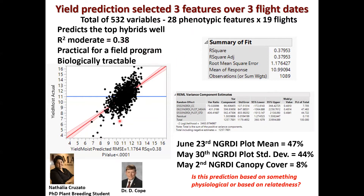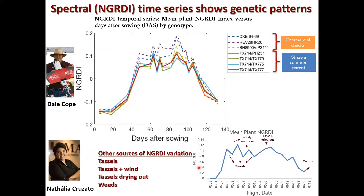The R-squared isn't really all that great, but we don't really care about predicting the worst material — we're hoping to predict the middle material and identify the highest yielders. What was really exciting was that the three key flight dates were May 2nd, May 30th when flowering occurred, and June 3rd, using different ways of extracting NGRDI. Most physiologists will tell you that grain yield is made between flowering and grain fill, around June 23rd, so these other two dates represent new variation we've never been able to capture before. A question remains: is this prediction based on something physiological, or just on relatedness as in genomic selection?